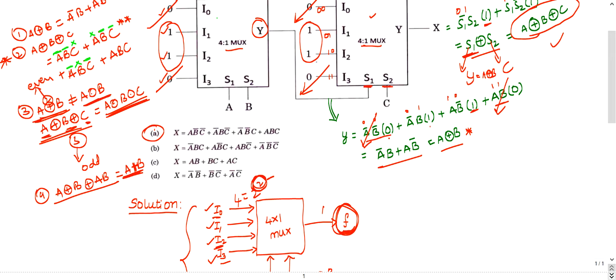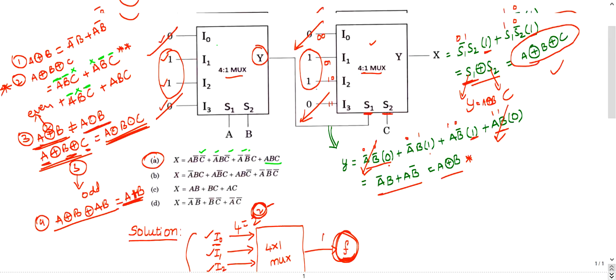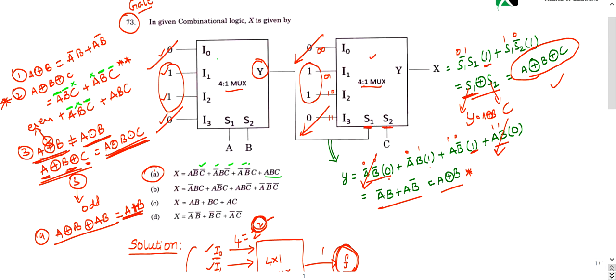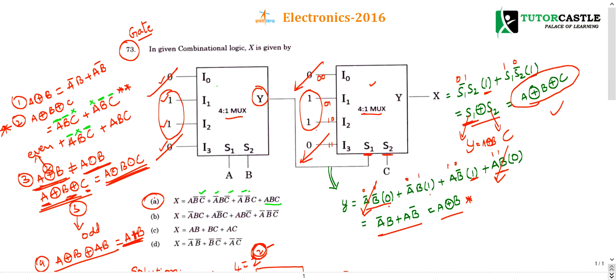So this question you can do in 30 seconds if you know the MUX concepts perfectly and if you know the expansion of A XOR B XOR C. Very simple question. I hope you understood. If you have any queries, post them in the comment box and subscribe to this channel for getting more updates.